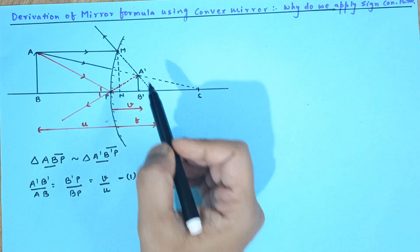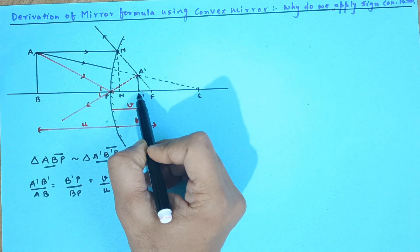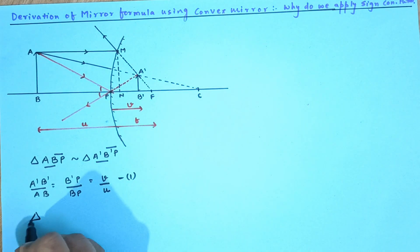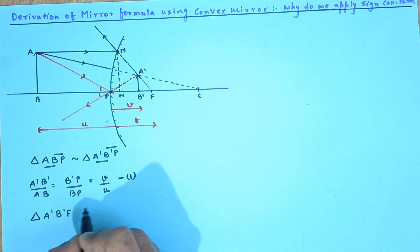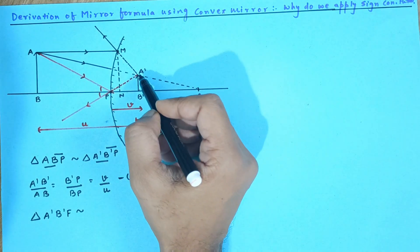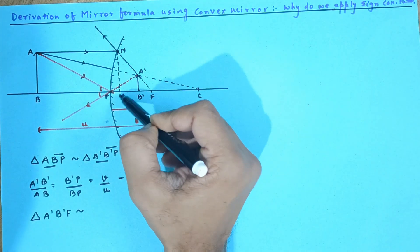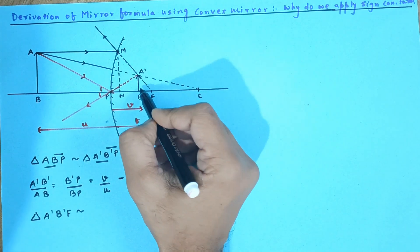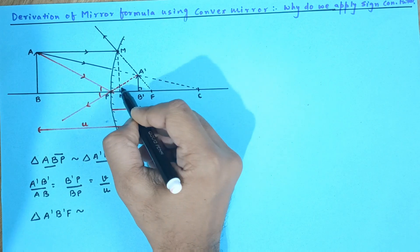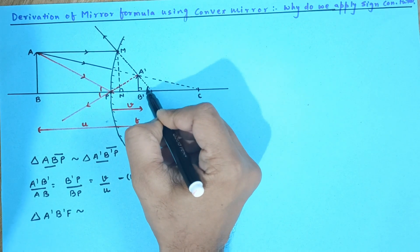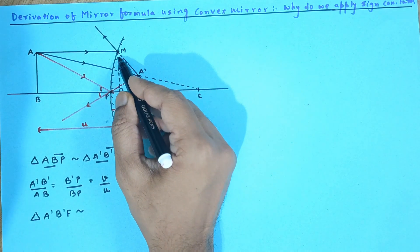And then I am going to consider this triangle A'B'F, triangle A'B'F and that triangle is similar to triangle MnF. You can see very carefully that this triangle, this angle is 90, this is 90. This is common for both the triangles. So this angle and this angle has to be the same.